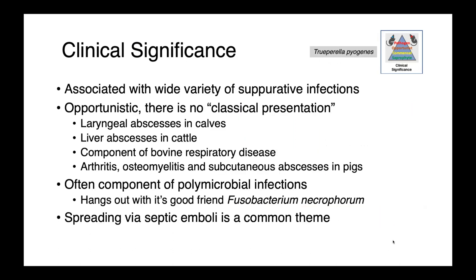Trueperella pyogenes is associated with a wide variety of suppurative infections. There is no real classical presentation — it's opportunistic, so it will gladly cause infections wherever it's given the opportunity, whether that's laryngeal abscesses in calves, liver abscesses in cattle, acting as a component of bovine respiratory disease, or causing arthritis, osteomyelitis, and subcutaneous abscesses in pigs. Trueperella pyogenes is oftentimes a component of polymicrobial infections, and it's famous for associating with its good friend Fusobacterium necrophorum, a non-spore-forming anaerobe we'll talk about in a couple of lectures.